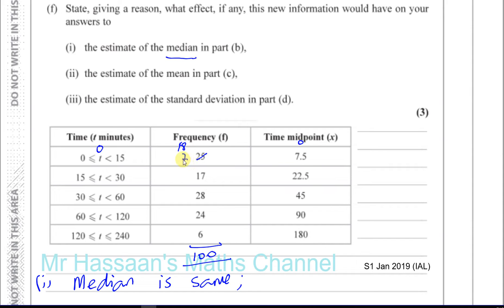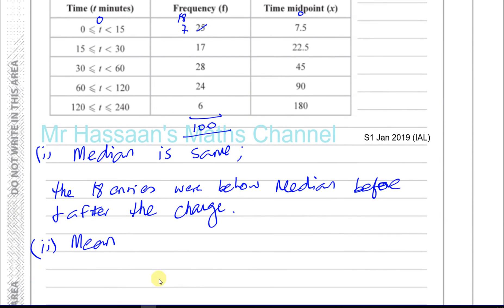So what's going to change is the sum of the times. The sum of the times is now going to get less because you've got, instead of 18 times the midpoint 7.5, you're going to have 18 times zero and then 7 times 7.5. So before it was 25 times 7.5, but 18 of those times are now zero. So that's 18 times zero plus 7 times 7.5. That's going to reduce the sum of the total times.